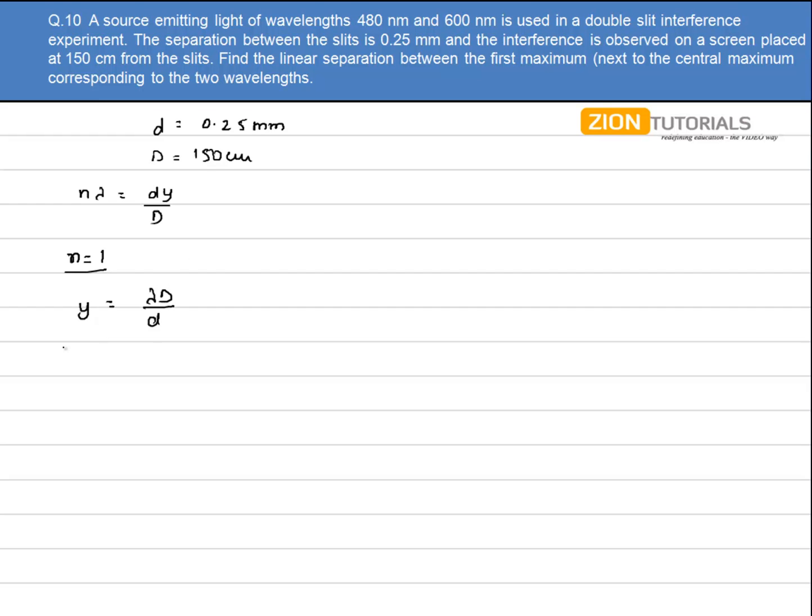For 480nm, the first maxima y₁ is calculated with λ = 480 × 10⁻⁹m, D = 1.5 meters, and d = 0.25 × 10⁻³m.